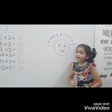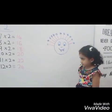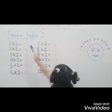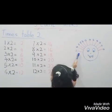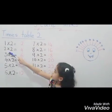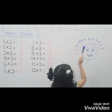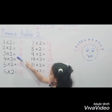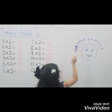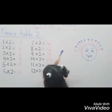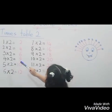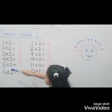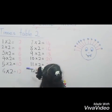Now let's check our answers. 1 times 2 is 2. 2 times 2 is 4. 3 times 2 is 6. 4 times 2 is 8. 5 times 2 is 10.